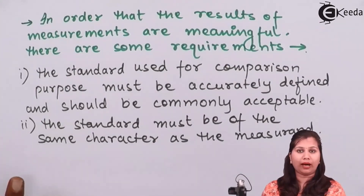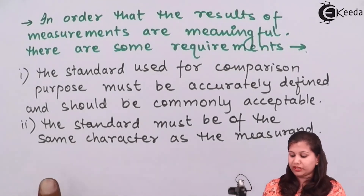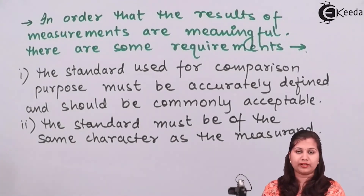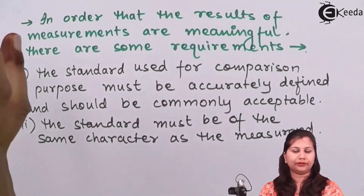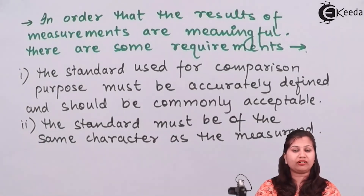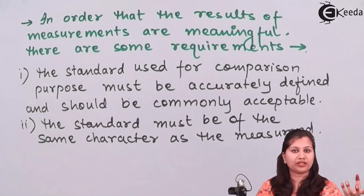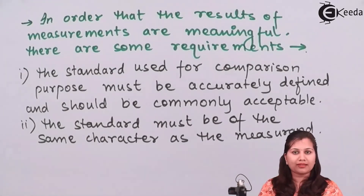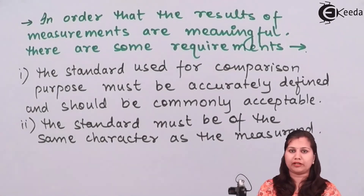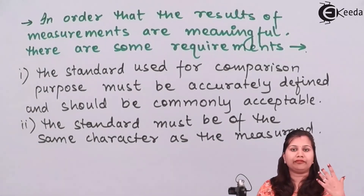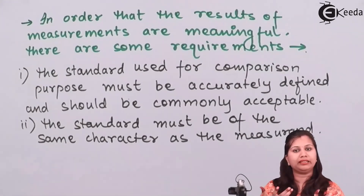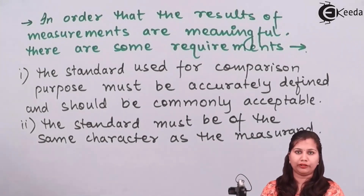The second requirement is that the standard must be of the same character as the measurement. If we are measuring length, we take the ruler as the standard. We cannot take a 1 kg mass as the standard for measuring length, because we are measuring length, not mass. The standard must be of the same character — if measuring length, the standard should also be length.